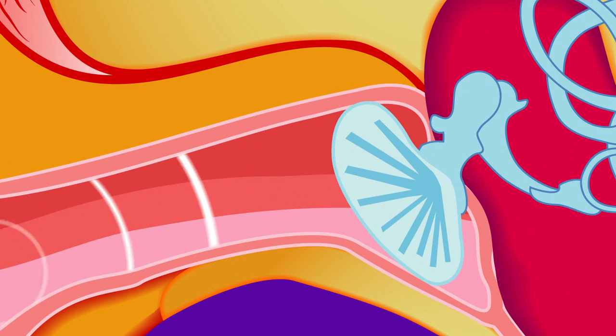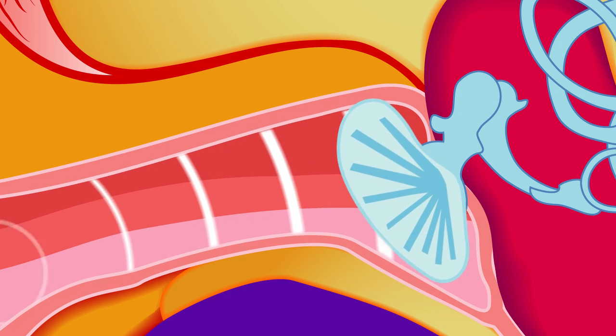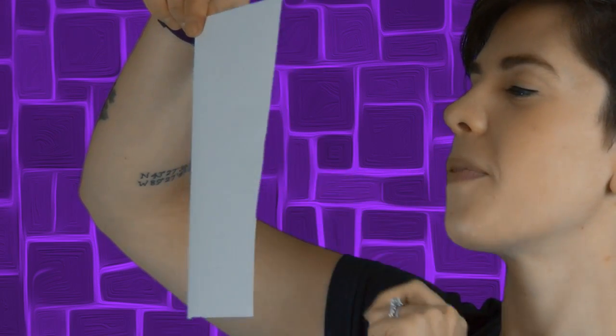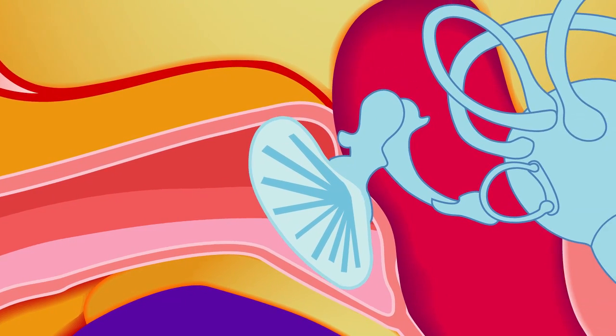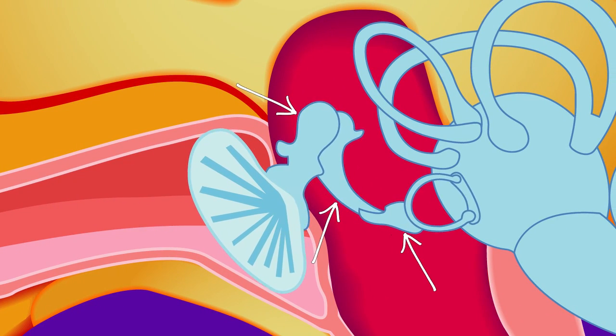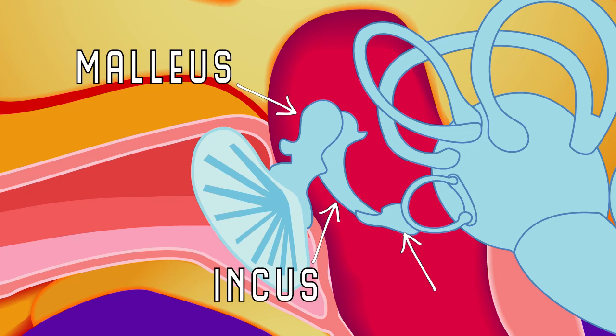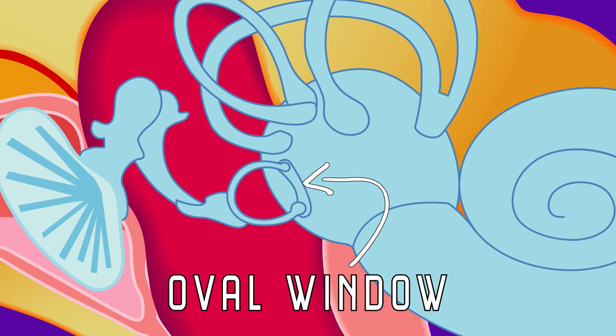This next part is kind of crazy. When the waves in the air hit the eardrum, they make the surface of the drum vibrate by moving it back and forth. Next time you have a piece of paper, hold it up and blow on it, or tap it to see what I mean. As the drum moves, the vibrations hit the three tiniest bones in your body, the ossicles of the middle ear, called the malleus, incus, and stapes. These bones act as levers to amplify the sound vibrations and pass them along to another membrane, called the oval window.